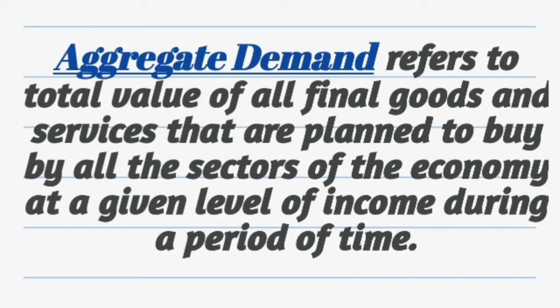Aggregate demand is the planned demand. It is not the actual demand. It is the planned demand towards a product. Whether a particular product will have its demand in the upcoming years or not is decided by aggregate demand.